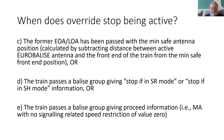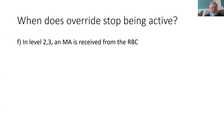If in level one the train passes over a Balise group which has a movement authority contained in it, that will also end the override, because we have fulfilled the purpose of getting to a place where we can receive a new movement authority. And that also applies in levels two and three if a movement authority is received from the RBC. For instance, passing over a Balise group using override at an end of authority enables the onboard to report its position accurately, and that enables the MA to be received from the RBC.